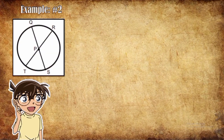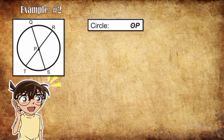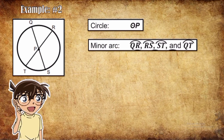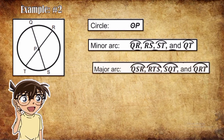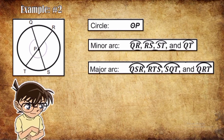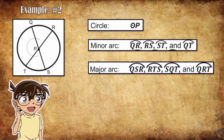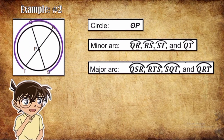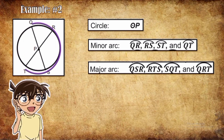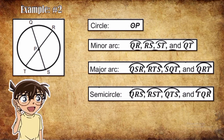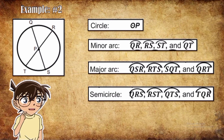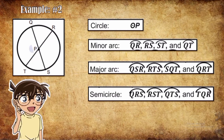Example number two. Now look at the illustration. This is Circle P. We have four minor arcs: Arc QR, Arc RS, Arc ST, and Arc QT. We also have four major arcs: Arc Q-S-R, Arc R-T-S, Arc S-Q-T, and Arc Q-R-T. We have four semicircles: Semicircle Q-R-S, Semicircle R-S-T, Semicircle Q-T-S, and Semicircle T-Q-R.